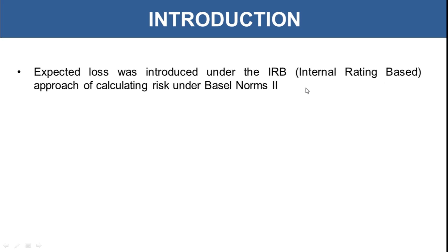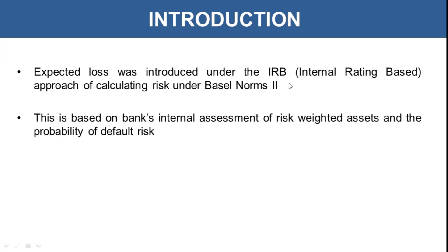There were two approaches: standardized and IRB approach. Under the IRB approach, banks used to do their own internal assessment and give risk weightage to different kinds of loans, and thus calculated overall Expected Loss. However, in the standardized approach, it was external rating — on the basis of the rating given by credit rating agencies — that was used to calculate Expected Loss.